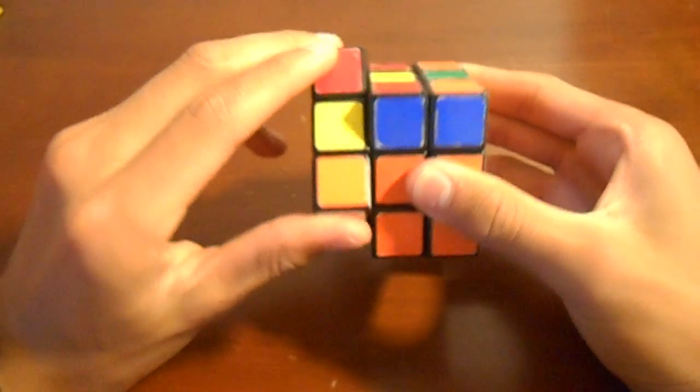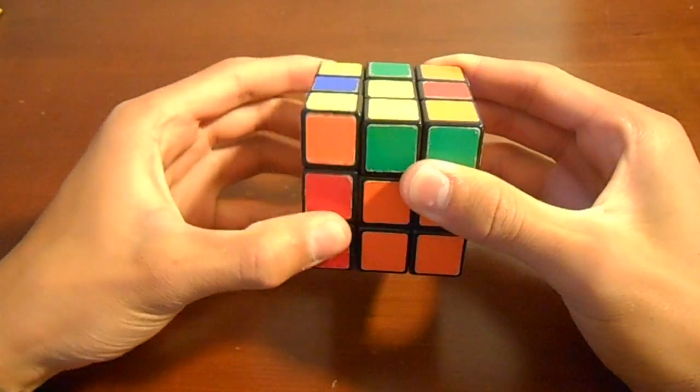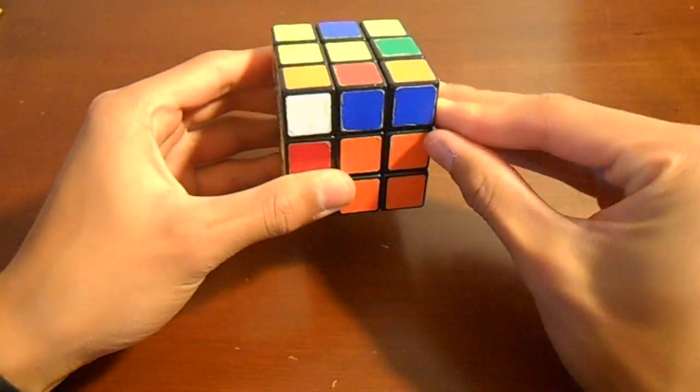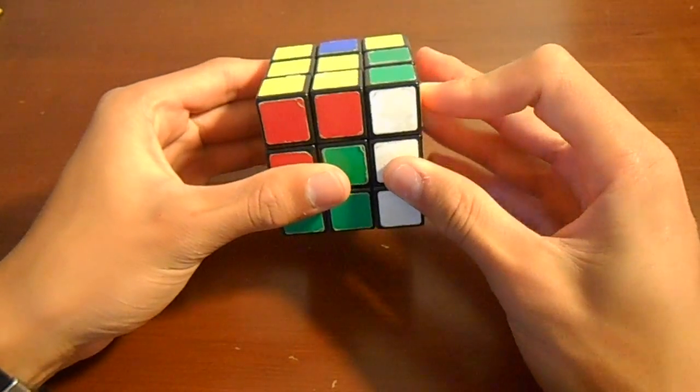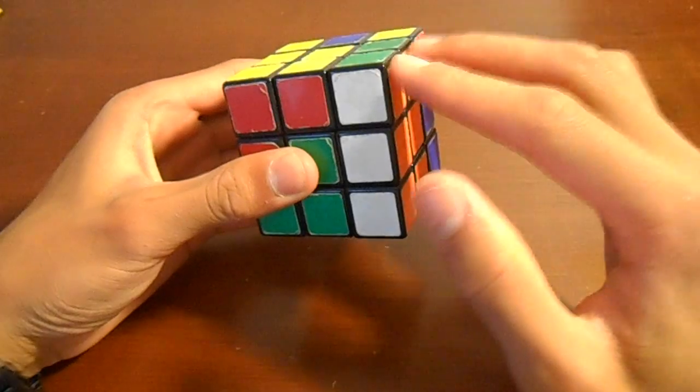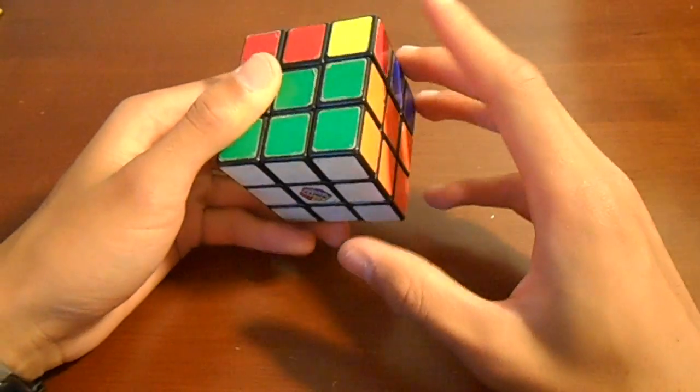And what we're going to do, once again, bring up the corner. Uninsert it. Move it back over. And then pair up the pieces with the first move. Insert the pair with the second move. And then move everything back on the third move.